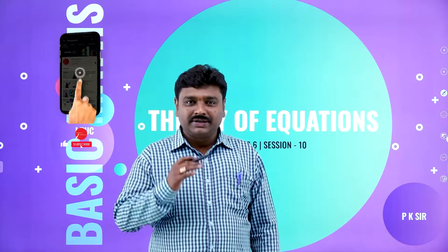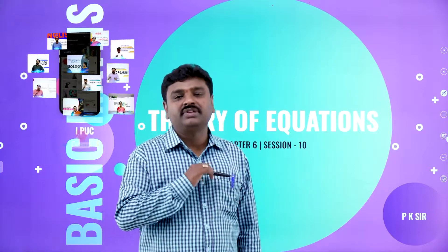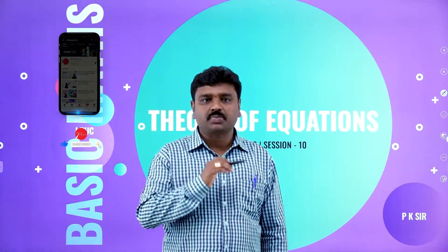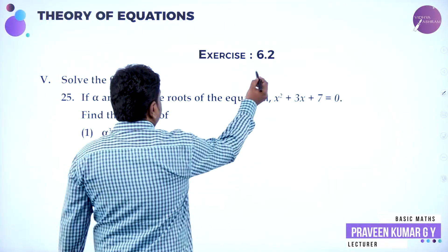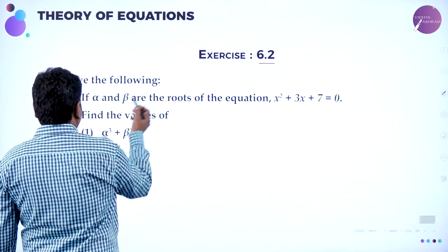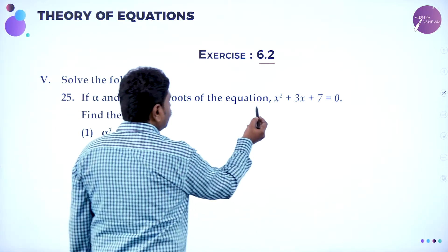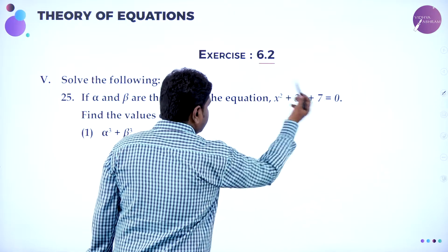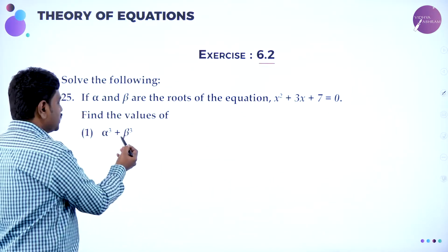Welcome to the session, dear students. Today we will go ahead with the problems of theory of equations, exercise 6.2. If alpha and beta are the roots of the quadratic equation x squared plus 3x plus 7 equal to 0, find the values of alpha cube plus beta cube.